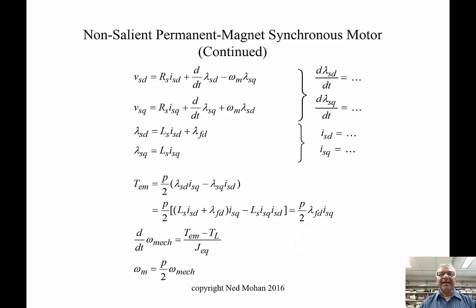We can write the D and Q-axis voltage equations in a similar manner and express these equations by bringing the dλ/dt term to the left-hand side. From the previous two equations, we have lambda SD and lambda SQ, and we can substitute for them, and these lambda terms can disappear.